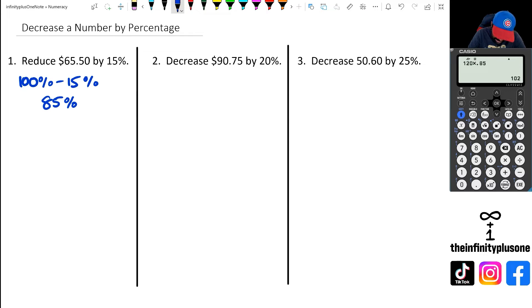Now 85% as a decimal is going to be 0.85, which means to reduce 65.50 by 15% all I'm going to do is 65.50 multiplied by 0.85.